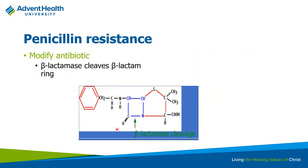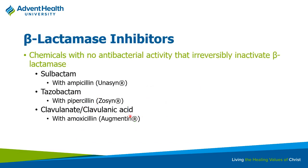How do bacteria become resistant to penicillins? If the beta-lactam ring is what makes the drug work, what if the bacteria produced an enzyme that destroyed it? That's where beta-lactamase comes into play — an enzyme bacteria produce to destroy the beta-lactam ring so the antibiotic can't do anything. Some drugs are naturally beta-lactamase resistant, but sometimes we need to give them extra help. This is where beta-lactamase inhibitors come in. There are three: sulbactam, tazobactam, and clavulanic acid.